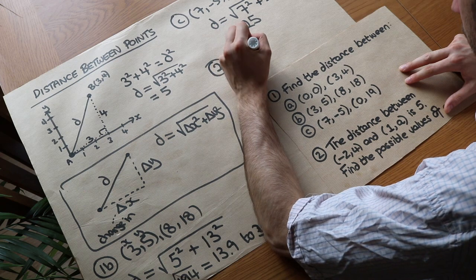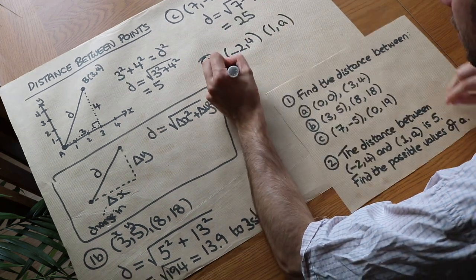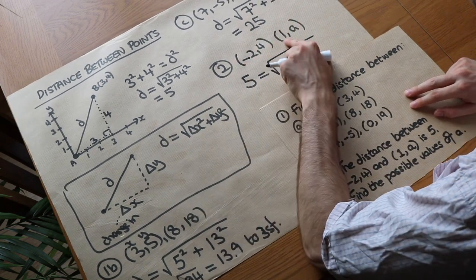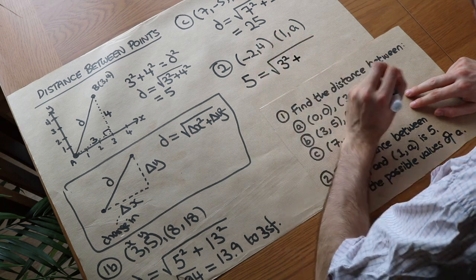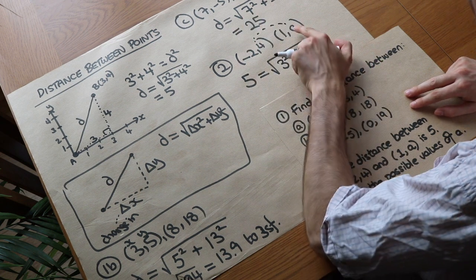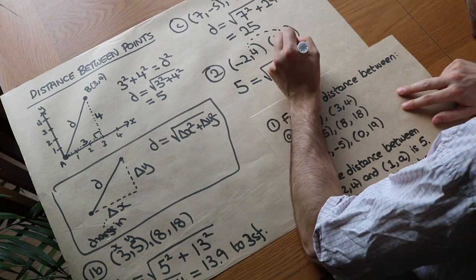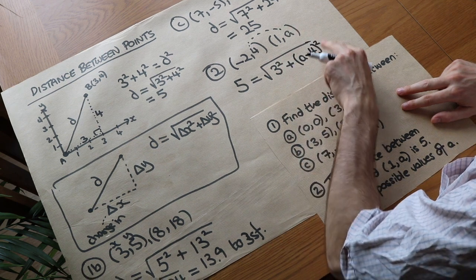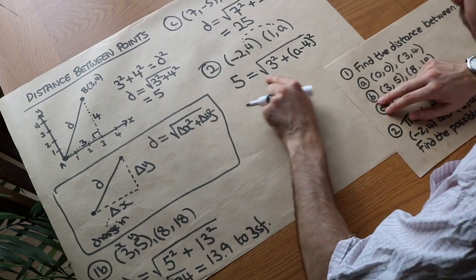How would we usually find the distance between these? Well, so we've got these two points. Well, we do the distance, which we know is 5, because it already tells us the distance 5 is the square root of the change in x squared. So the change from minus 2 to 1 is 3. So 3 squared plus, and what's the change in y? Well, to find the change, we subtract them. So it's going to be a minus 4 would be the change. So we can write a minus 4 squared. And it doesn't matter if we put 4 minus a squared the other way around, because when we square it, it's going to be the same anyway.